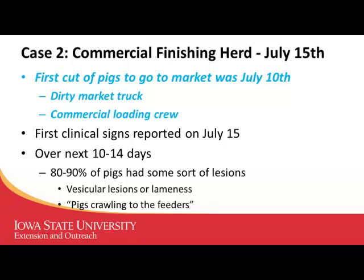From that first initial report of clinical signs, over the next 10 to 14 days almost 80 to 90 percent of the pigs had some sort of lesion. They tended to have vesicular lesions either around the coronary bands on the feet or lameness. Reports indicated the pigs were still able to get to the feeder — they would just crawl on their knees to get there. That was something we don't normally see at all. This was probably the highest prevalence of animals with lesions of the finishing pig cases reported.